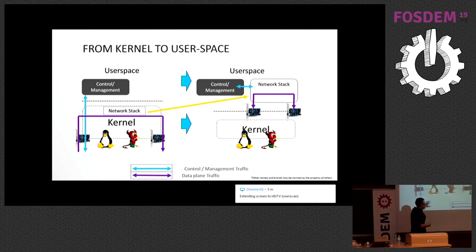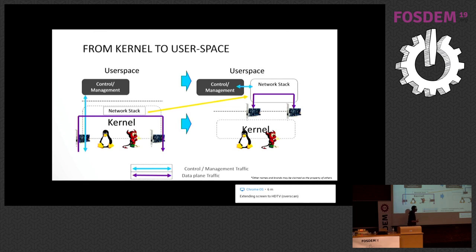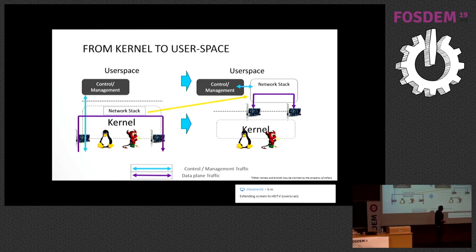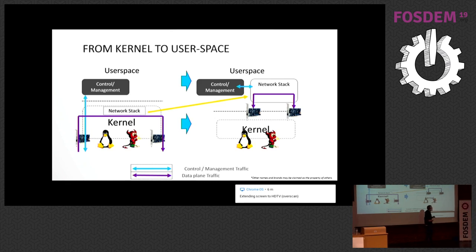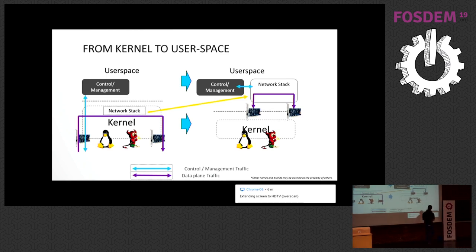Everybody's familiar with the kernel — whether it's the BSD kernel, the Windows kernel, or the Linux kernel — taking care of your networking needs. In your kernel there's a network stack. What user space networking is, is essentially unplugging the network cards from your kernel, whatever flavor of operating system you're using, and then giving it to a user space application — so pulling it out of the kernel so those network cards are no longer visible to the kernel, and giving them to a user space application.